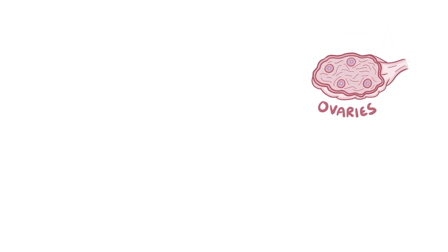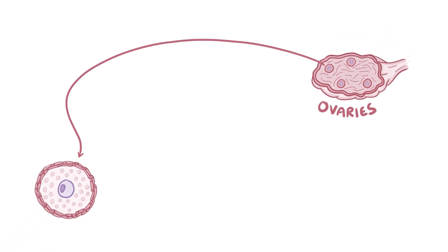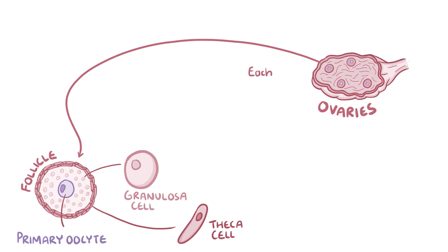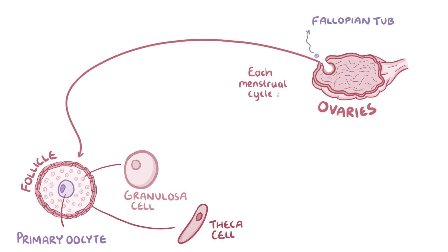During the reproductive period, the ovaries have basically got a ton of ovarian follicles scattered inside them, and each ovarian follicle is made up of a ring of granulosa and theca cells surrounding a primary oocyte at the core. And during each menstrual cycle, one of these follicles ruptures at ovulation, and it releases the oocyte out into the fallopian tube.